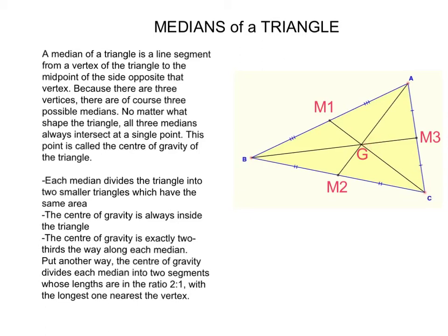The same applies to BG, which is twice the size of GM3, as well as AG, being twice the size of GM2.